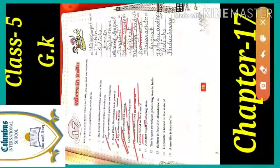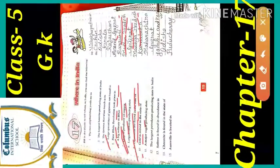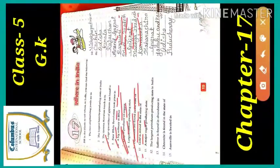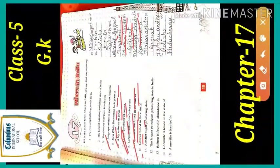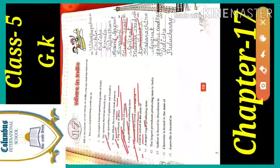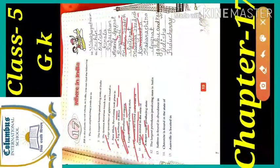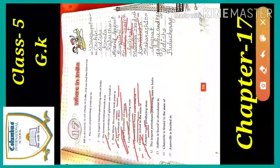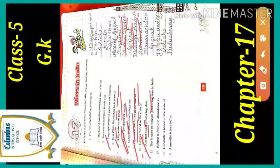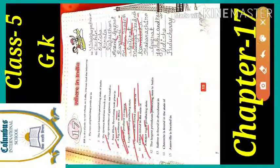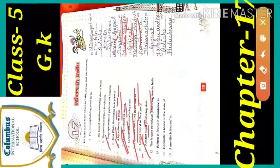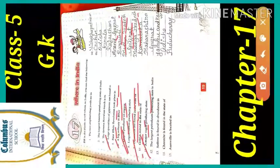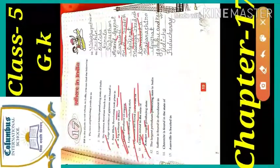Gold is mined in the state of Karnataka. A major sugar producing state is Maharashtra.